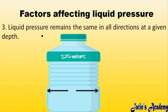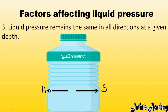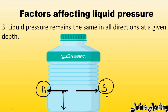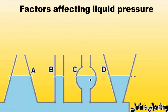The third factor: liquid pressure remains the same in all directions at a given depth. For example, in a container of water, at points A and B which are at the same level, the same amount of liquid pressure is exerted. It is not the case that point A has more pressure and point B has less — at the same depth, liquid pressure is the same.